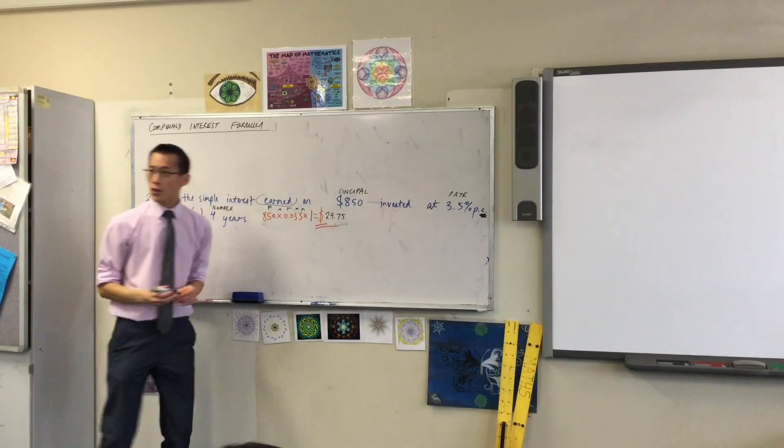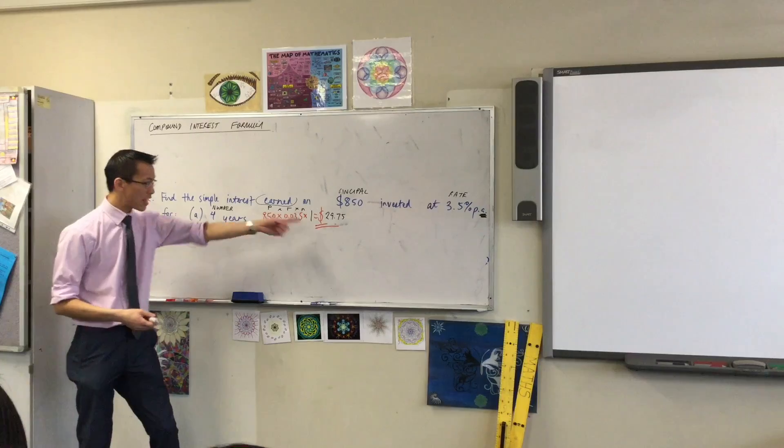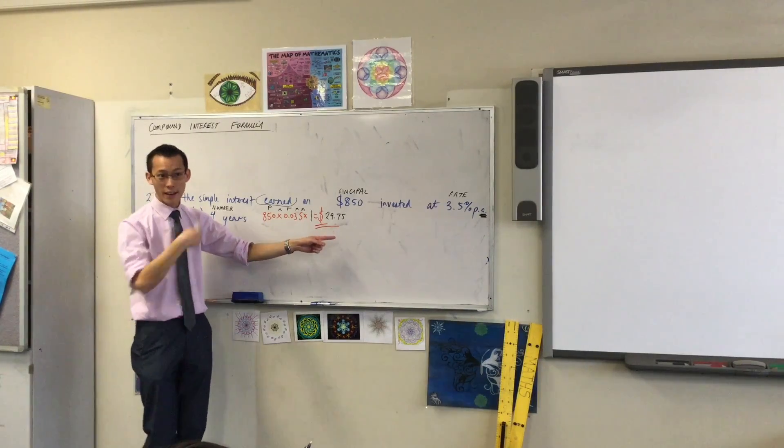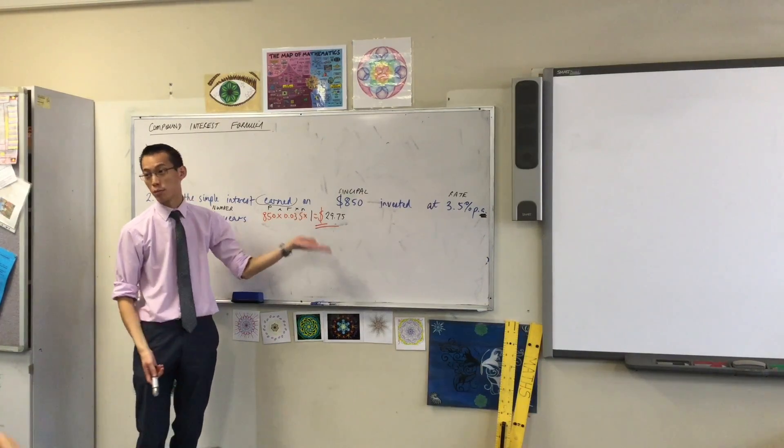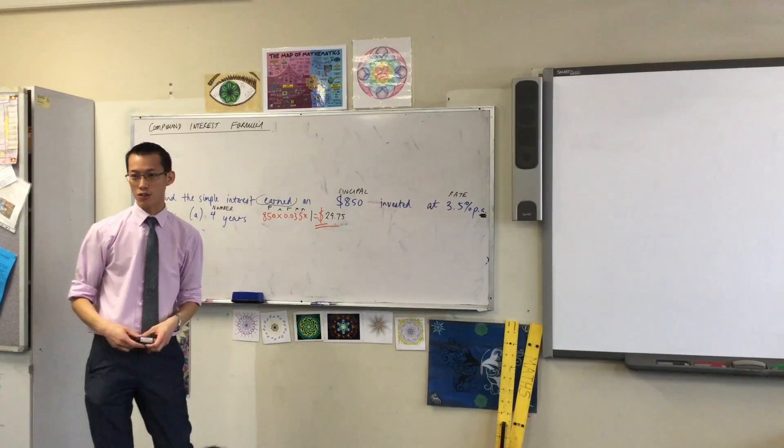So you've got this, and then the more years you add on, you just keep on adding this number again and again and again, which is why if you multiply by 4, you'll just go back when you started, you'll have $119.